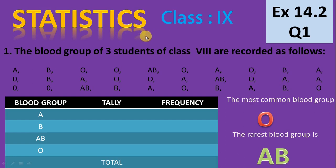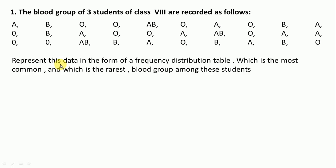In today's class we will solve ninth mathematics statistics exercise number 14.2, question number one. The blood group of 30 students of class 8th are recorded as follows. These are the blood groups of 30 students. Represent this data in the form of a frequency distribution table. Which is the most common and which is the rarest blood group among these students?